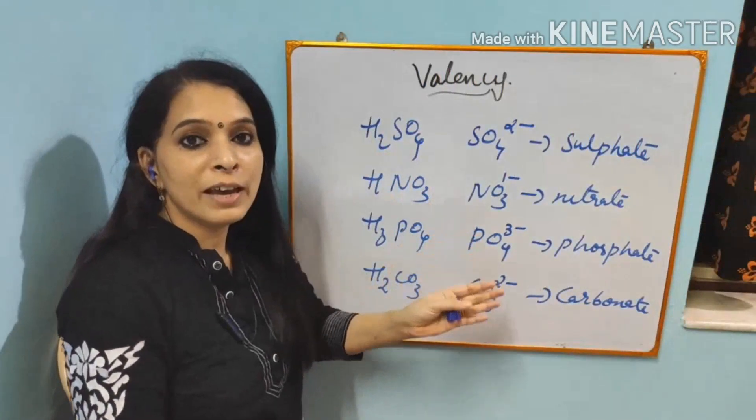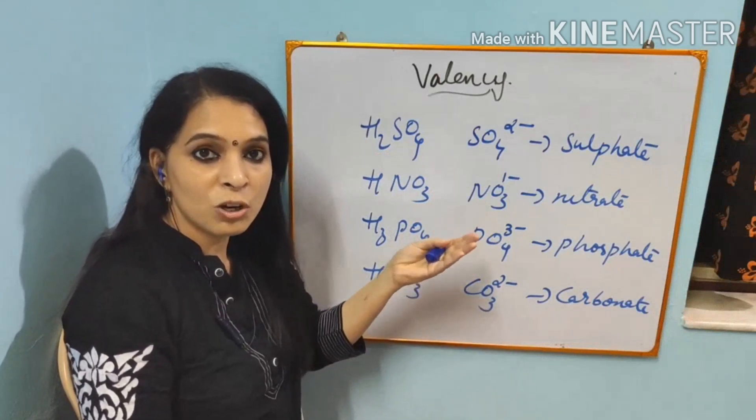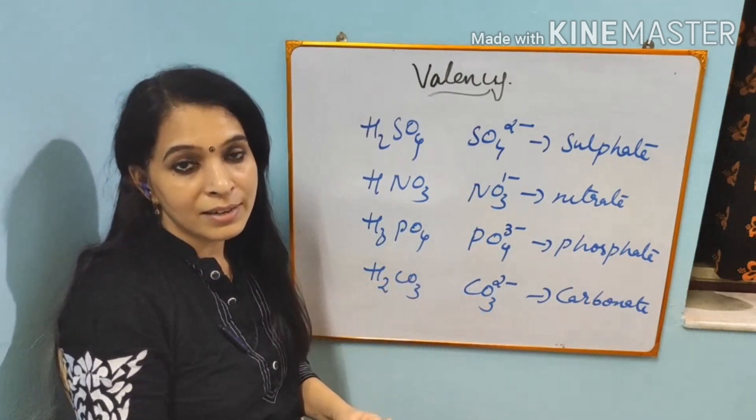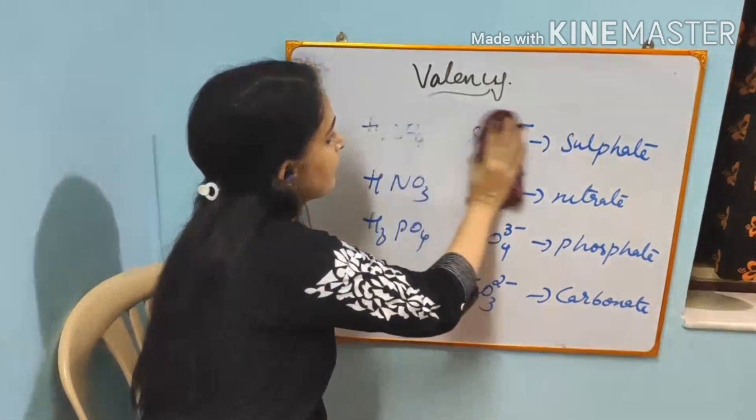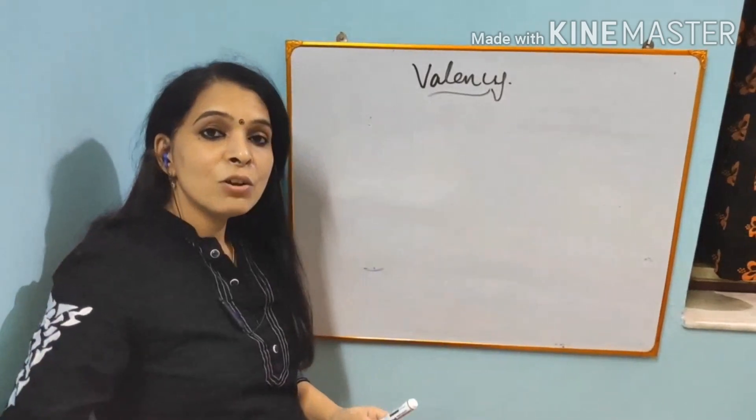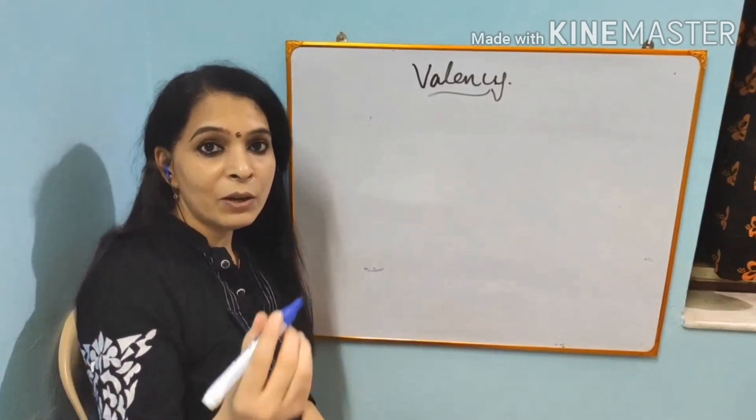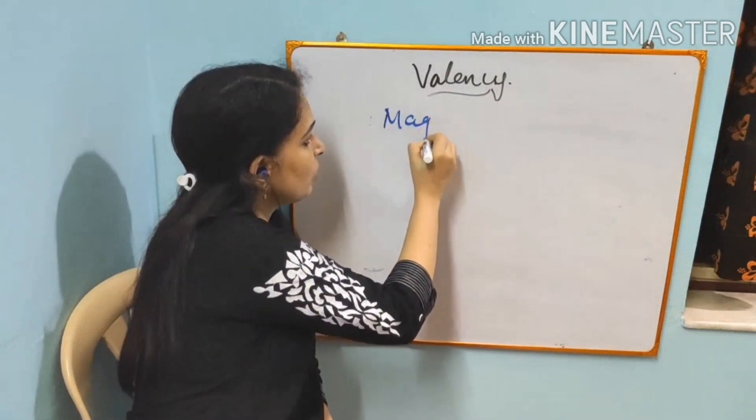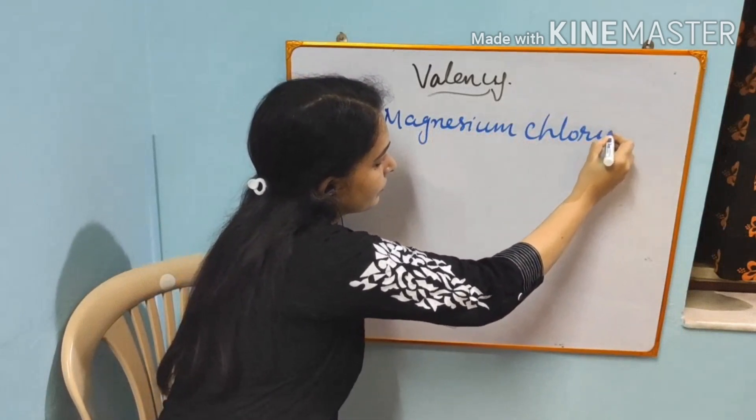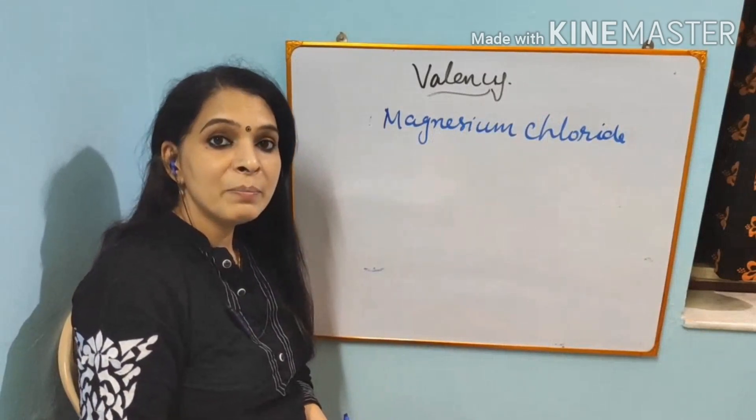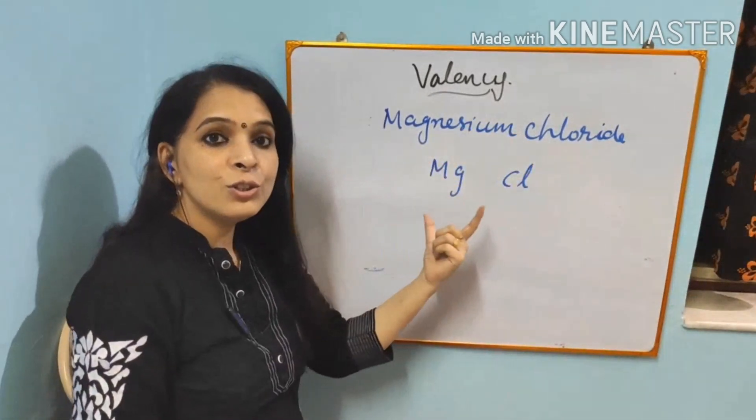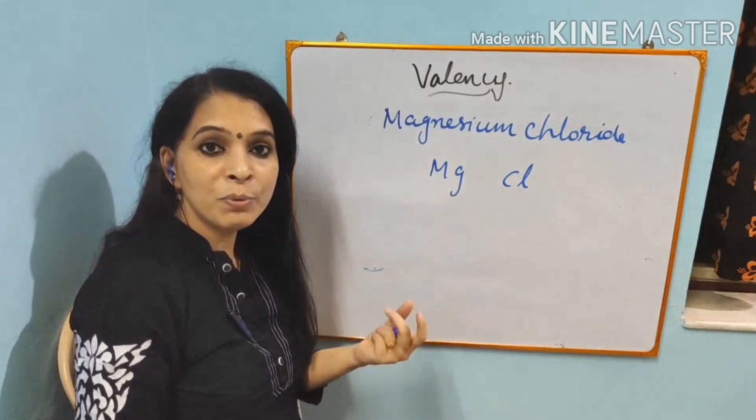Now if you know all the valences of ions, as I have shown before, and only with atomic ions, now you can easily write the formula. Let us see how to write the formula. This method is known as Criss-Cross method. For example, if I want to write the formula of magnesium chloride. I will first write the symbols of magnesium and chlorine. Magnesium is Mg. Chlorine is Cl. Now they are going to be bonded.